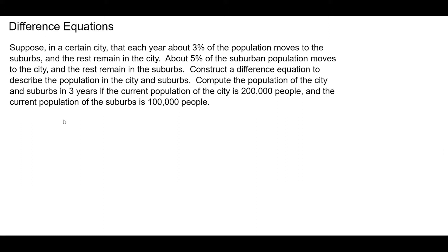This problem says, suppose in a certain city that each year about 3% of the population moves to the suburbs and the rest remain in the city. About 5% of the suburban population moves to the city and the rest remain in the suburbs. Construct a difference equation to describe the population in the city and suburbs. Compute the population of the city and suburbs in three years if the current population of the city is 200,000 people and the current population of the suburbs is 100,000 people.